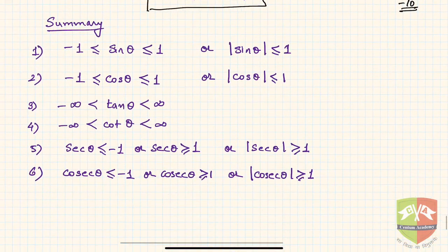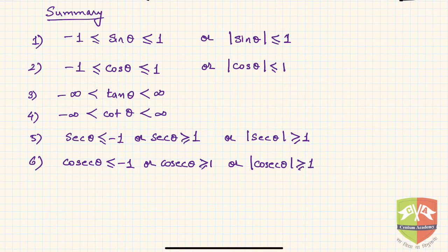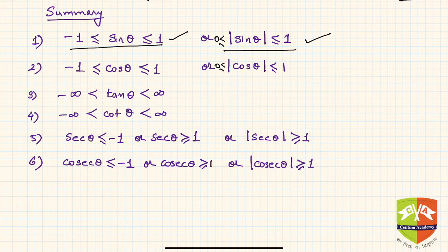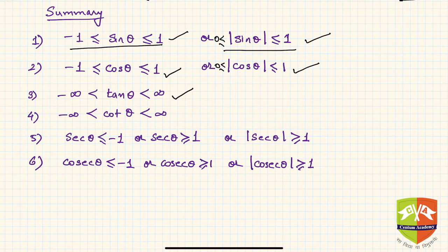To summarize: sinθ varies from minus one to one, which can also be written as |sinθ| ≤ 1. The modulus of sinθ is always less than or equal to one, so 0 ≤ |sinθ| ≤ 1. Similarly for cosine: −1 ≤ cosθ ≤ 1. For tan theta: −∞ < tanθ < +∞. Note that we do not write 'equal to' infinity since infinity is not a defined number.